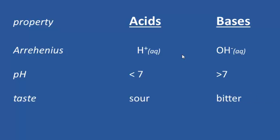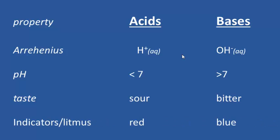Next, taste: acids have a sour taste, and bases taste bitter. For indicators, litmus: acids turn litmus red, and bases turn litmus blue. Here's a memory trick — bases, bitter, and blue all begin with the letter B. So bases are bitter and turn litmus blue. That's a lot about bases already!